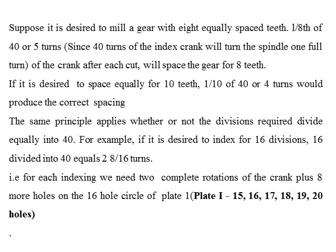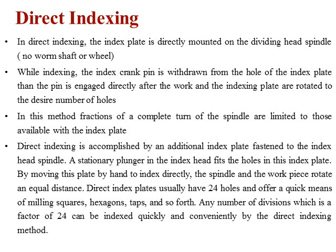So 40 divided by 24 equals 1 and 16/24. For a full revolution that means 1 complete turn plus 16 holes on a 24-hole circle. If we are using plate 1, the available hole circles are 15, 16, 17, 18, 19, 20. We select the 24-hole circle and mark accordingly. This is the process of indexing.